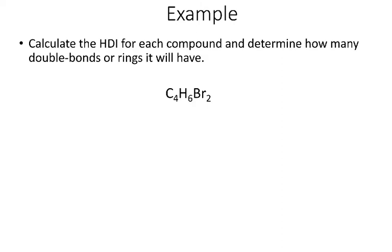Okay, we've got C4H6Br2. Again, N is 4, so 2 times 4 plus 2 is 10, and remember the halogens count just like hydrogens, so effectively I have 6 plus 2, I have 8 hydrogens. So I'm 2 less than the number I need to be saturated, so in this case my HDI is 1, and I would have 1 ring or pi bond.